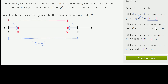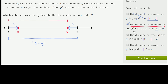The distance between x and y prime — that's the red distance right over there — is less than the absolute value of x minus y. That's pretty clear. Y prime is closer to x than y is, so this distance is less than that distance. We can check the box right over there — that one is absolutely true.